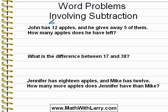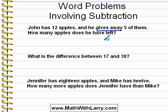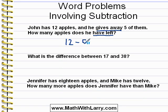Let's take a look at this first problem. John has 12 apples, and he gives away 5 of them. How many apples does he have left? I see two key phrases that can possibly help us. 'Gives away' usually implies subtraction, because we're starting with a certain number of items and then some of them are going away — they're being subtracted. 'Have left' might also imply subtraction, but we have to be very careful and look at the rest of the problem. In this case, we are dealing with a subtraction problem, and we simply do 12 minus 5 to get 7.